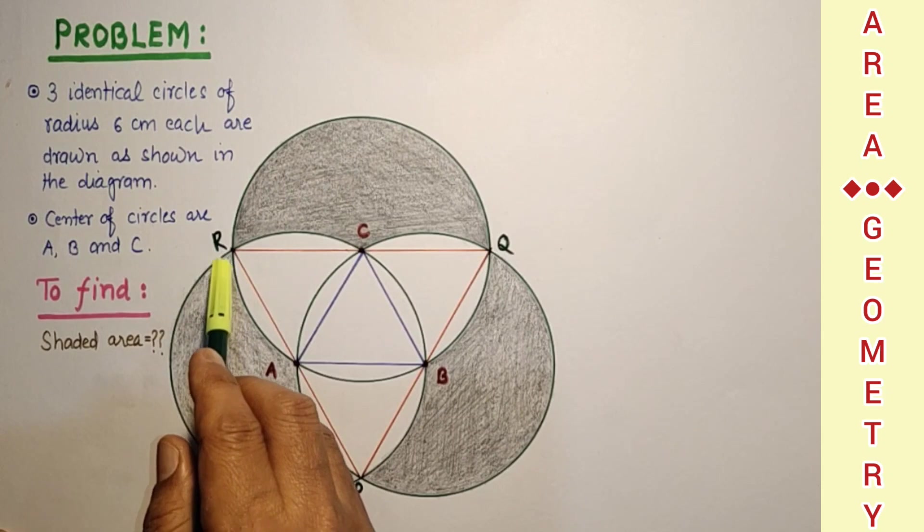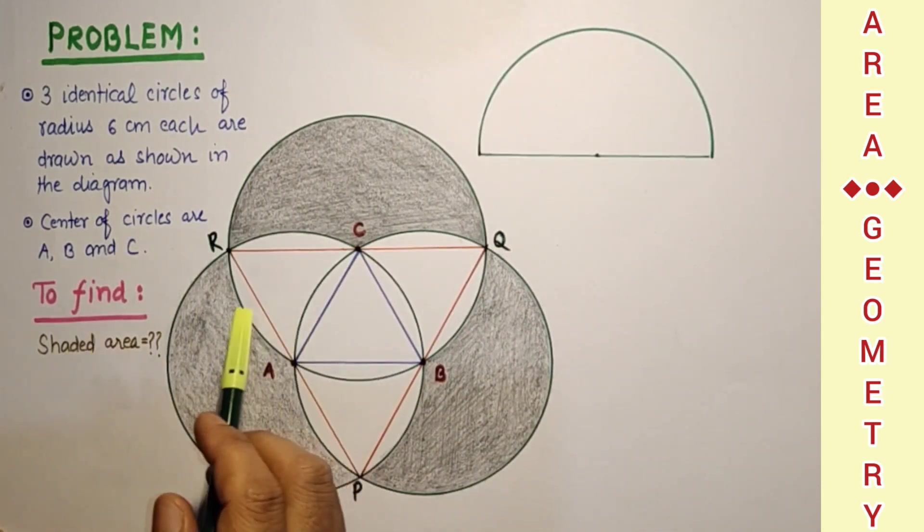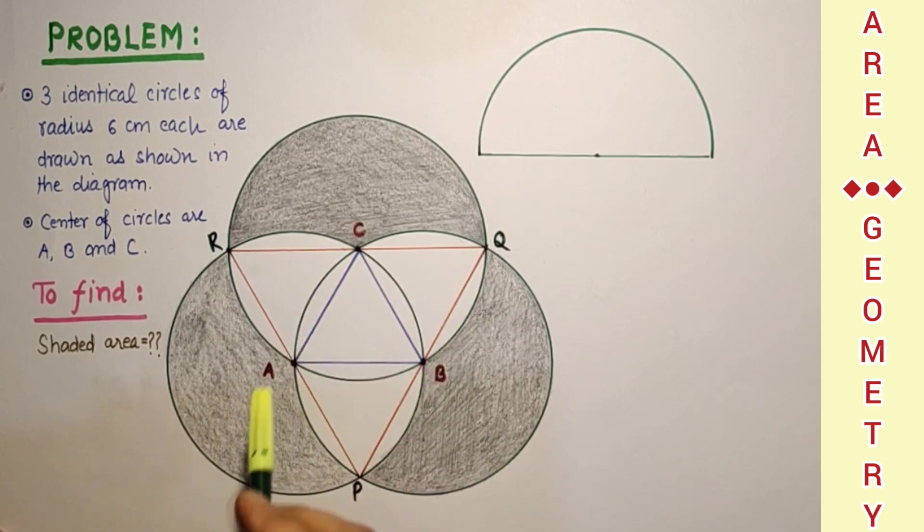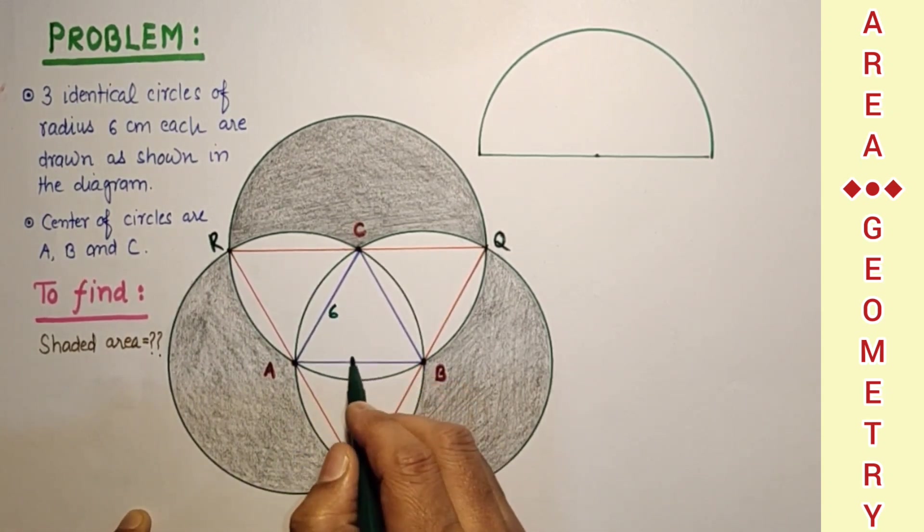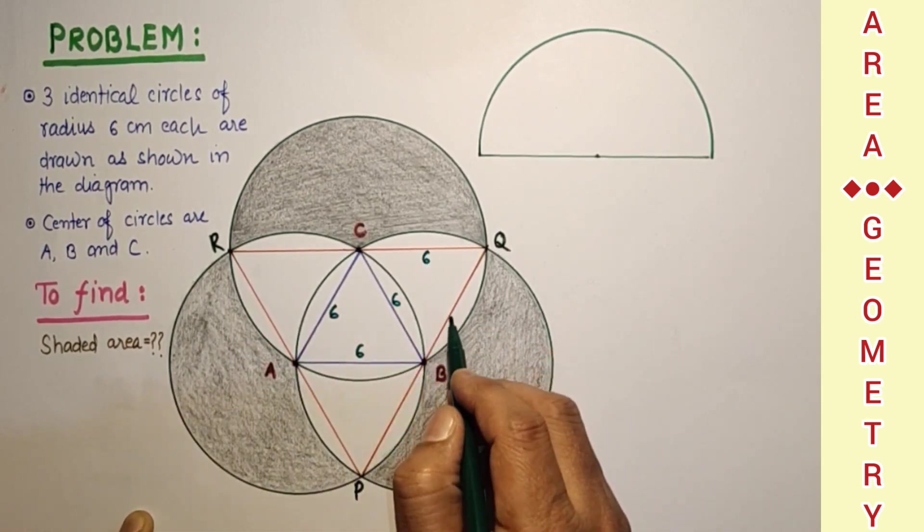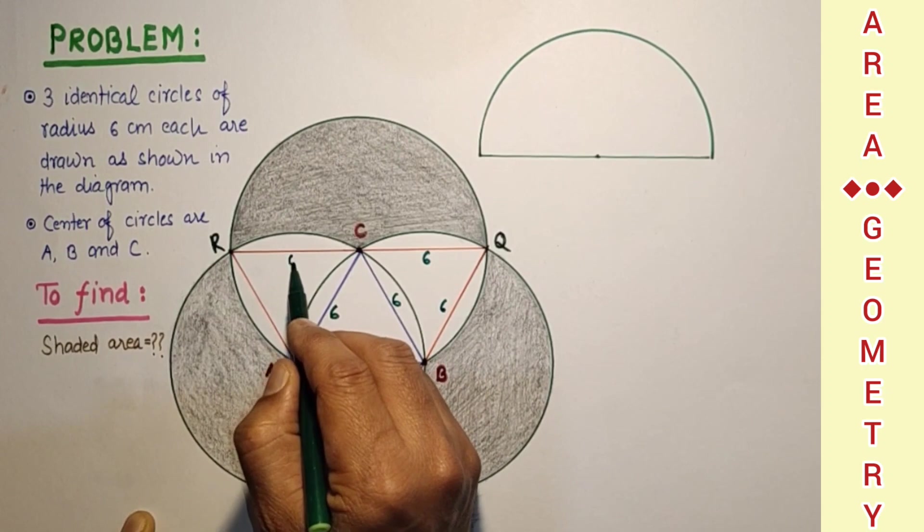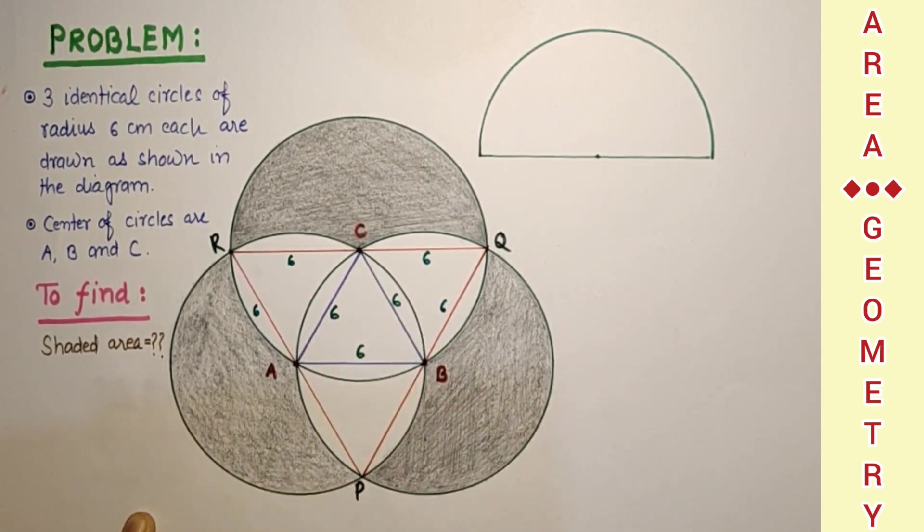So let us do for this semicircle and these two segments. We are given that radius of each circle is 6 cm. So this is 6, this is 6 and this is 6. All are 6. This triangle is an equilateral triangle. This is also an equilateral triangle with 12 cm as the side of the triangle.